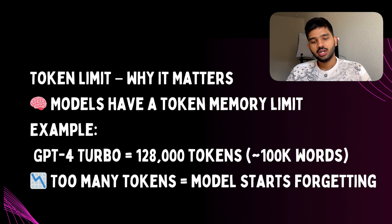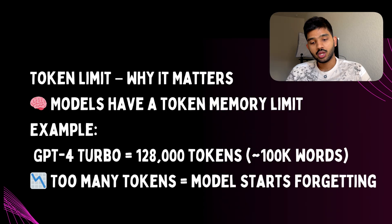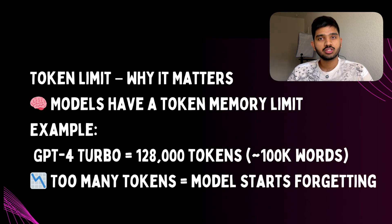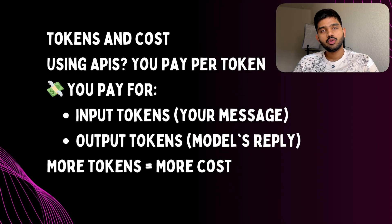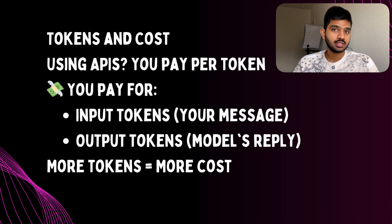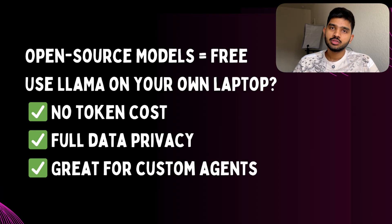Every model has a token limit. For example, GPT-4 Turbo can handle up to 128,000 tokens — that's around 100,000 words. If our conversation goes beyond that, the model starts forgetting what was said earlier. So if you're chatting and the model forgets your last message, it has probably hit the token limit. This is very important when we build long conversations or complex automations. One more thing about tokens: if we use a model like ChatGPT through an API, we pay per token — both for the tokens we send and the tokens it replies with. So a long message equals more tokens, which means more cost.